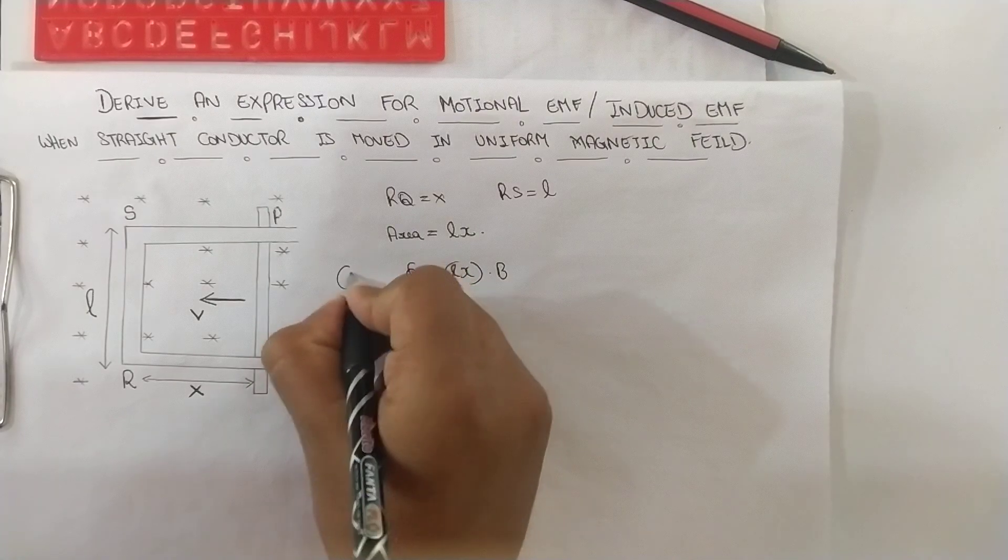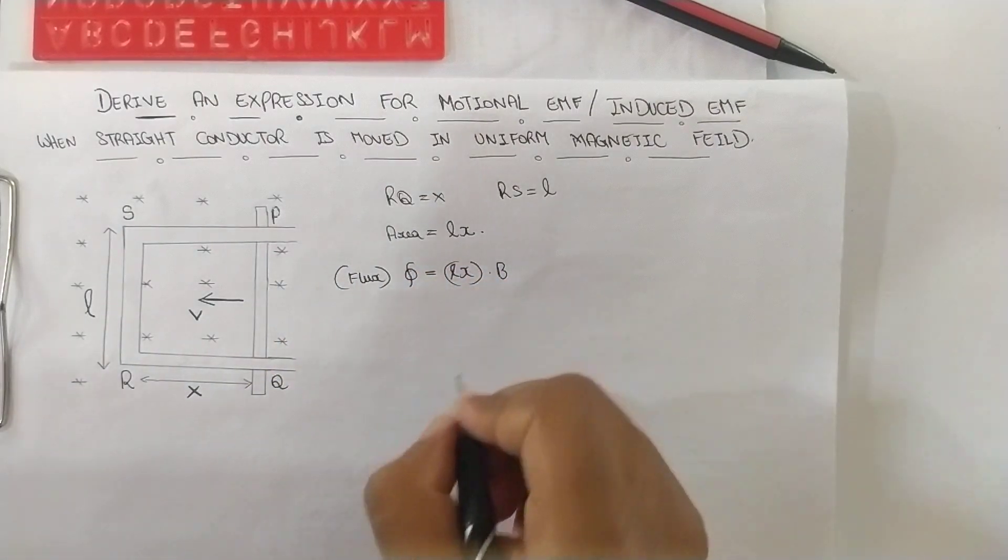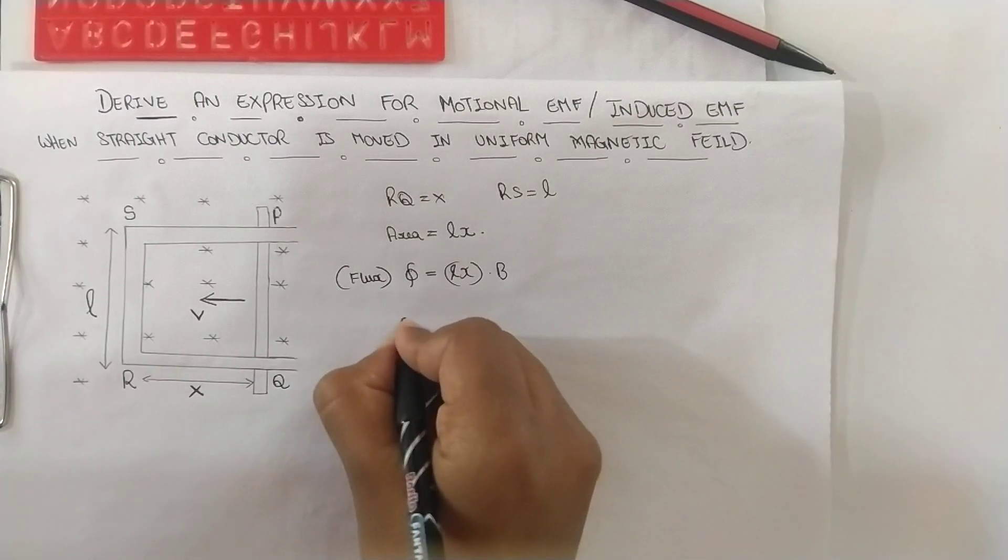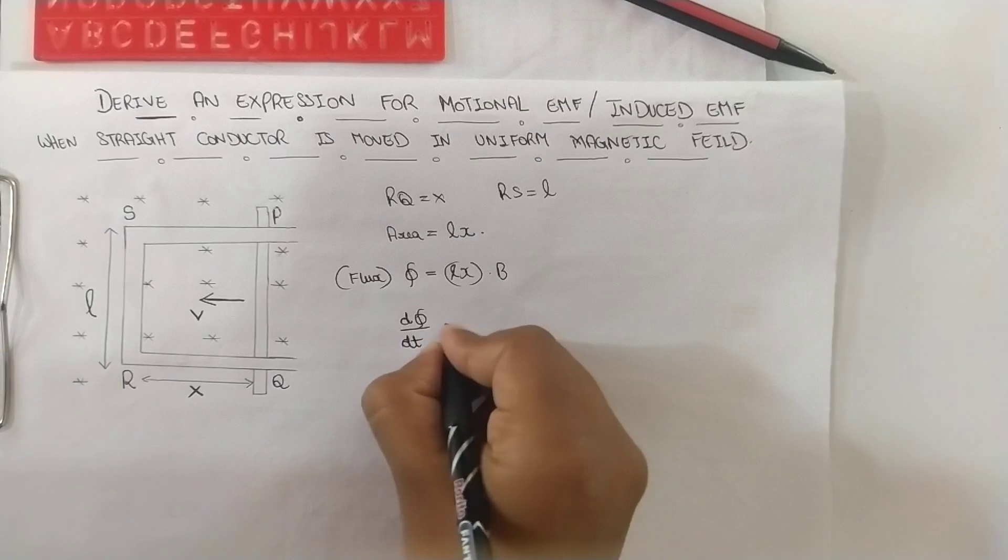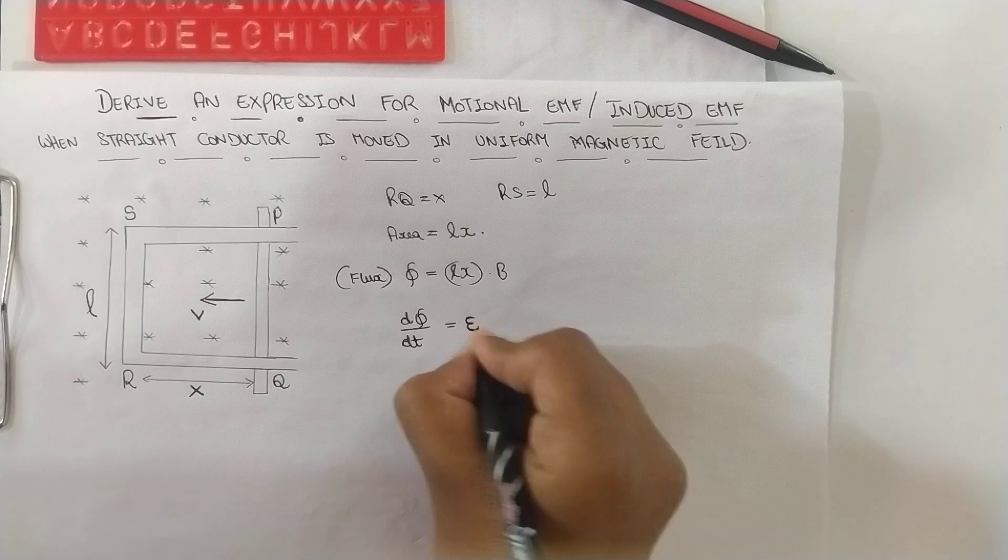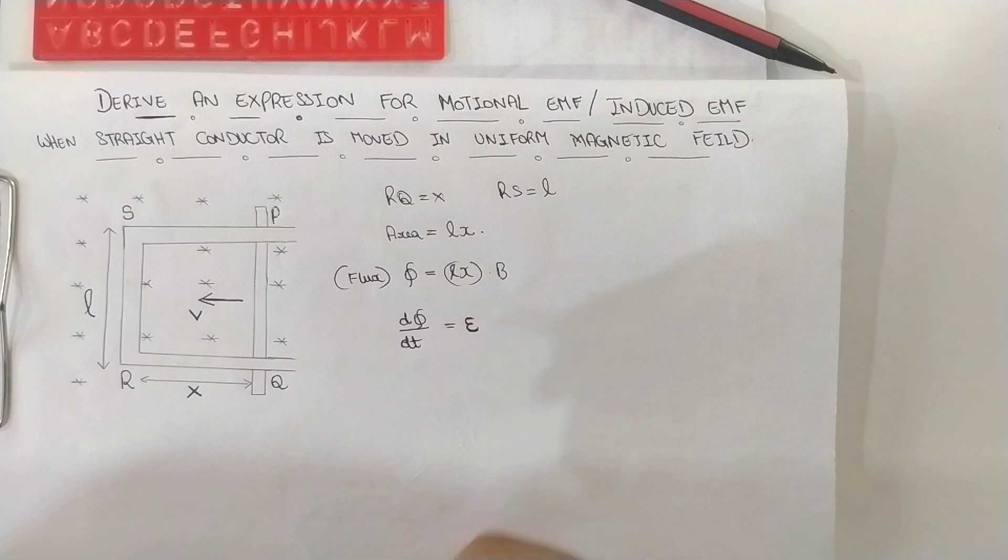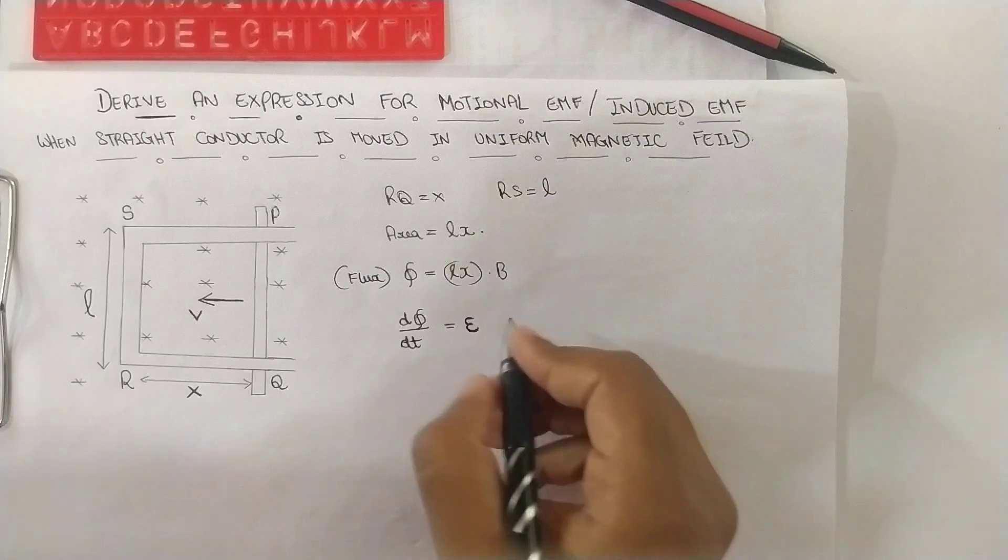Now this is flux and the rate of change of flux from the Faraday's second law. The rate of change of flux, that is d phi by dt, is the motional EMF. According to Faraday's second law, the rate of change of flux is the motional EMF. And that is what we are deriving in this equation.